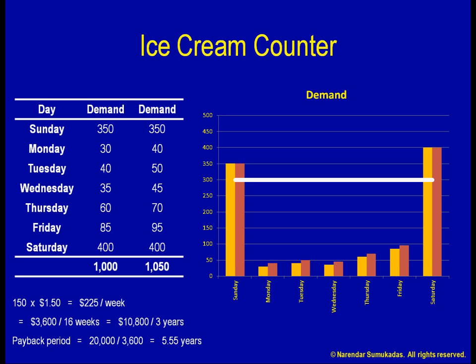Wait a minute. Am I missing something here? Am I not making the same mistake that I made earlier? Suppose a customer shows up at 11 a.m. on Sunday and asks for an ice cream. I am busy at that time, but I say, 'No problem, sir or ma'am. I have planned my capacity on a daily basis, so there is enough capacity for you sometime today. As a matter of fact, I can serve you your ice cream at 1:52 p.m. Please come back at that time.' Can I really serve the 11 a.m. customer's demand at 1:52 p.m.? Clearly, just like it doesn't make sense to match demand and capacity on a weekly basis, it doesn't make sense to match them on a daily basis either.